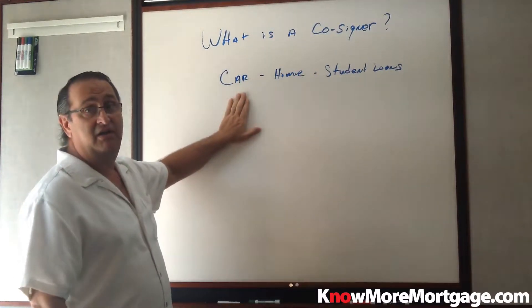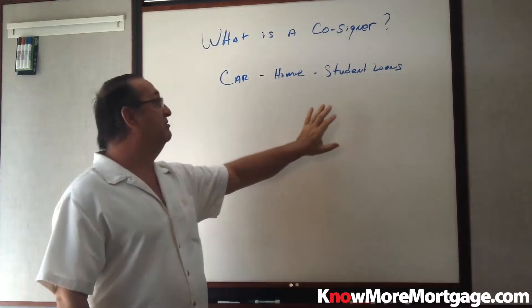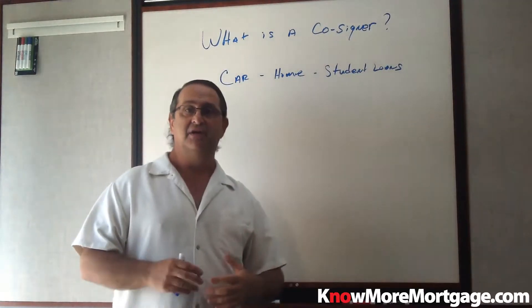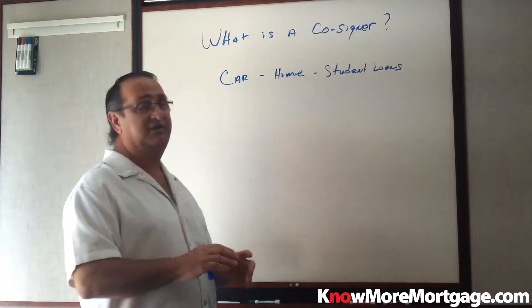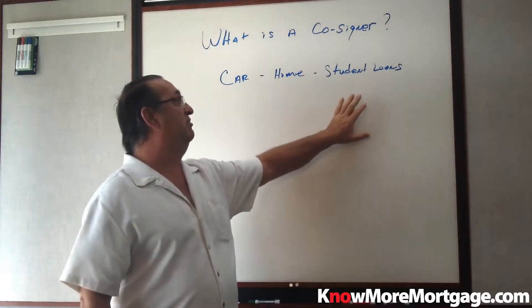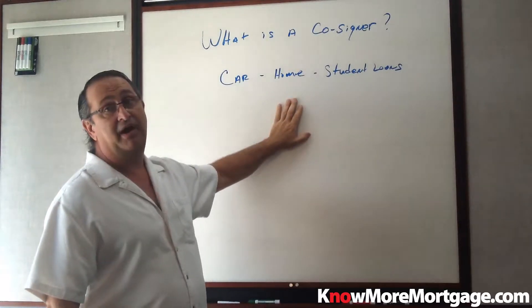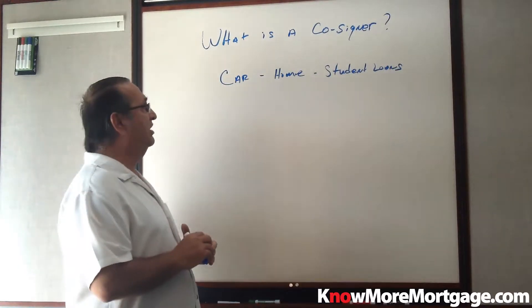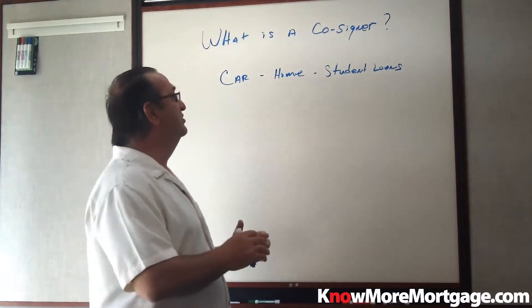Whether you're co-signing for a car, a home, or student loans — these are the more common things we see in the mortgage industry. There are other things too: boats, canoes, whatever we've seen. These just happen to be the most common. Parents most commonly co-sign for their children for student loans and for cars, and it impacts them when they go to buy a house, because that debt is there. Similar to how we move debt from personal to business for the self-employed, we're going to do the same here.